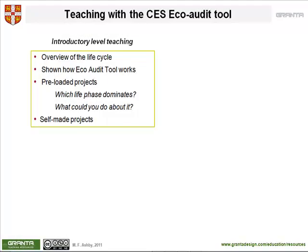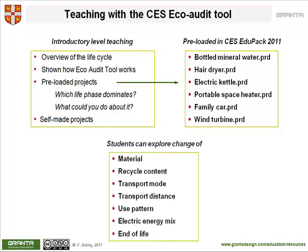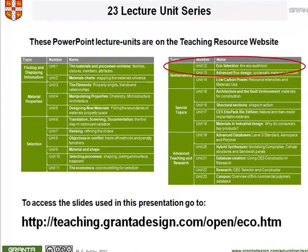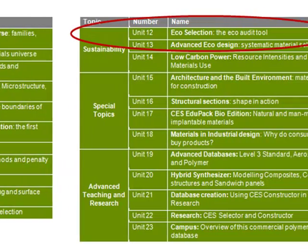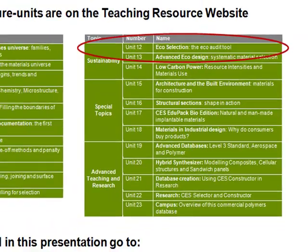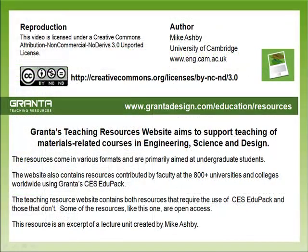Here we summarise the teaching outcomes enabled by the use of the EcoAudit tool. The tool comes with a set of preloaded eco-audits in which the bill of materials, the process choice, the transport mode and distance, and the duty cycle are already entered. Beyond this, students can carry out their own investigation of a product by dismantling it and setting up an eco-audit project for themselves. This video is an excerpt from one of 23 lecture units available on the Teaching Resource website. Unit 12 has been made open access under a Creative Commons licence. There are resources both on eco-design and the EcoAudit tool, and also on low-carbon power systems, including white papers, exercises with work solutions, and other lecture units.